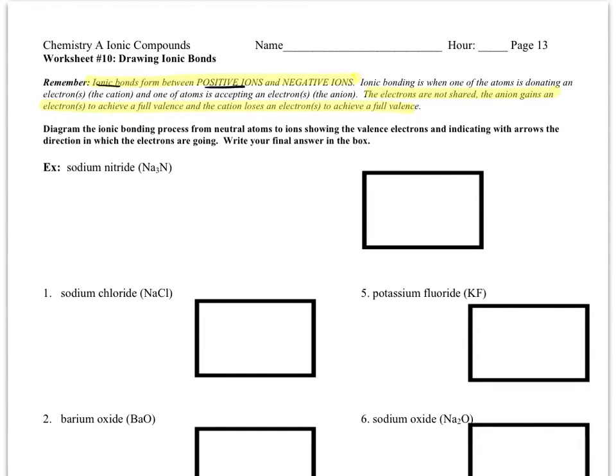Reminder: ionic bonds form between positive ions (the metals) and negative ions (the non-metals). In this type of bond, the electrons are not being shared between the positive and negative ions, but instead the anion (non-metal) is going to be gaining electrons to fill their shell, and the cation is going to be losing electrons to get rid of that partially full outer shell.